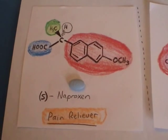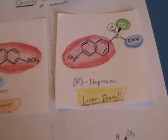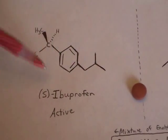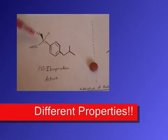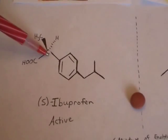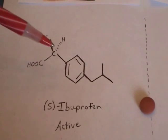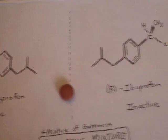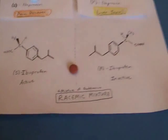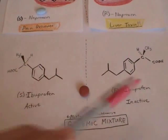Enantiomers are mirror images. Naproxen is sold as a single mirror image — it is not sold as a mixture with its R counterpart. In contrast, ibuprofen has a very similar chemical structure, but slight changes in structure give different compounds. It's a different compound, but it still has a carbon with four different groups, so it's got a stereocenter, making it a chiral compound that can show handedness. This is called S-ibuprofen, and its mirror image is R-ibuprofen, which is inactive. Ibuprofen is sold over the counter as a racemic mixture — meaning a mixture of both the left-handed and right-handed versions of those molecules.